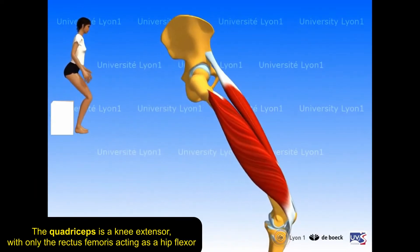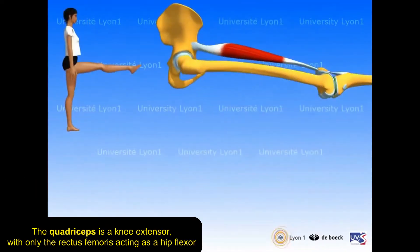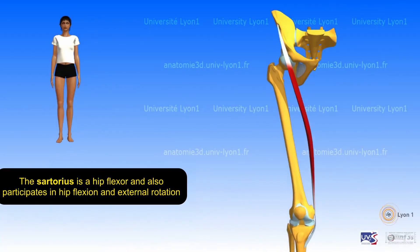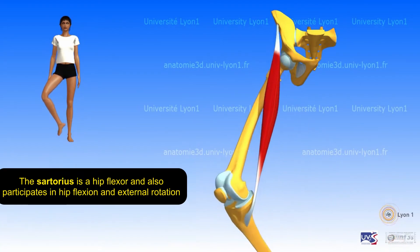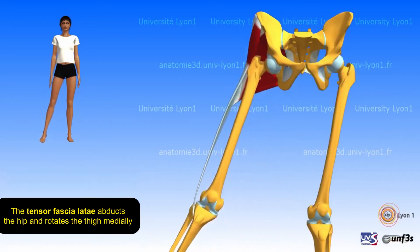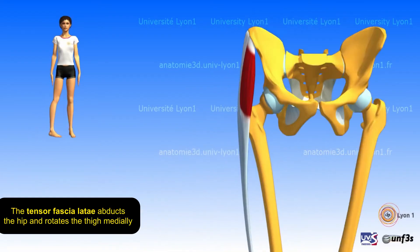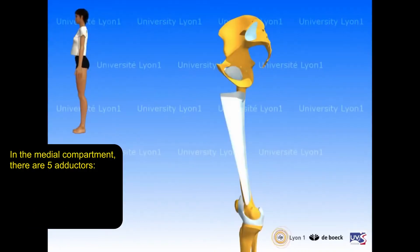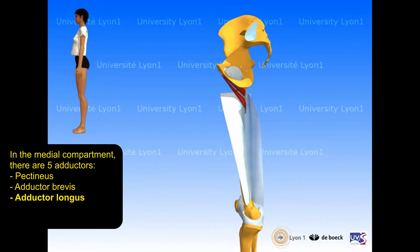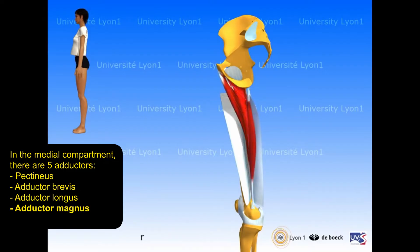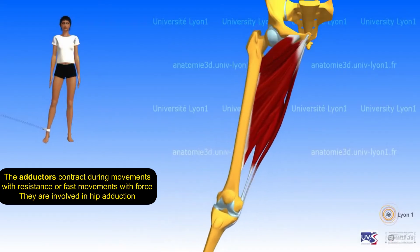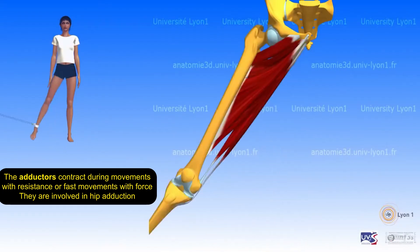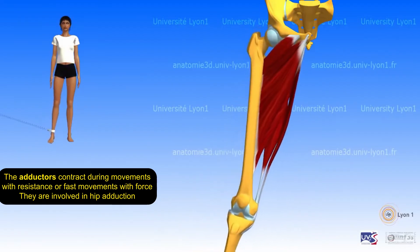The quadriceps is a knee extensor, with only the rectus femoris acting as a hip flexor. The sartorius is involved in hip flexion and external rotation. The tensor fasciae latae abducts the hip and rotates the thigh medially. In the medial compartment, there are five adductors: pectineus, adductor brevis, adductor longus, adductor magnus, and gracilis. They are involved in hip adduction.